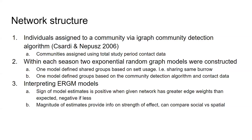Interpreting these ERGM models: a positive sign of model estimates means the given network has more edge weights than expected; negative means less. The magnitude of estimates provides information on the strength of the effect. Doing one ERGM for spatial groupings and one for the social groupings defined in step one is a way to compare which is the better grouping to explain the contact data found in the study.